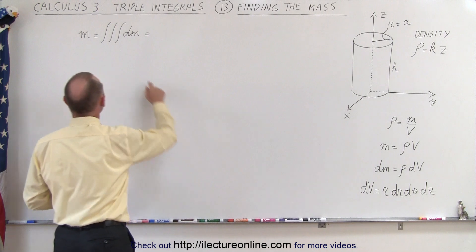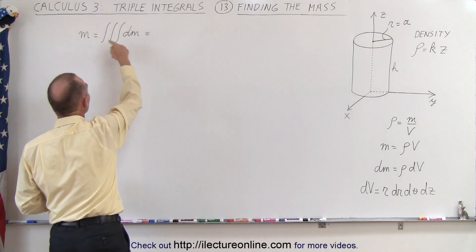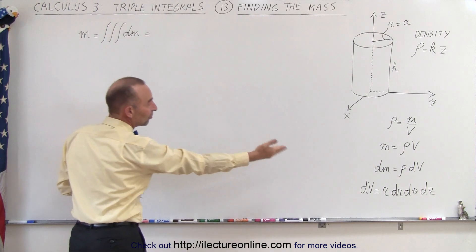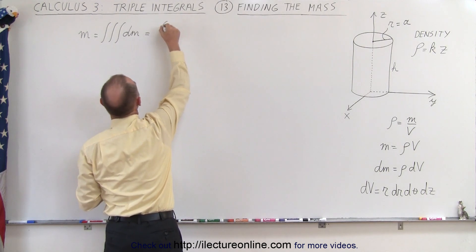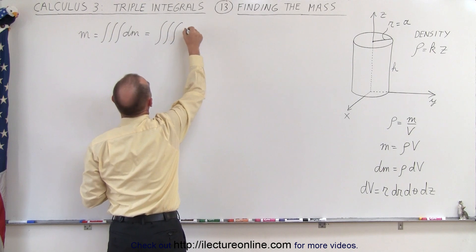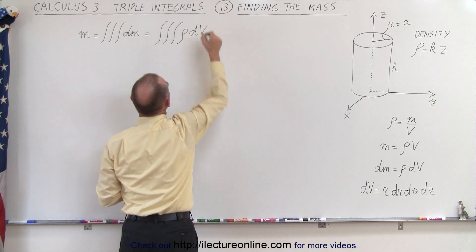When we want to find the mass, we're simply going to use the triple integral of dm. Since dm is the density times dV, we can say that's the integral of density times dV.